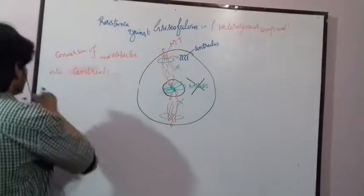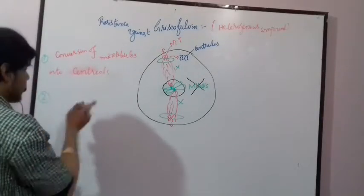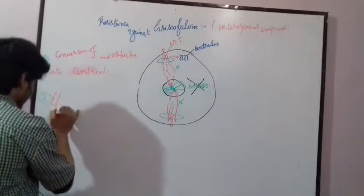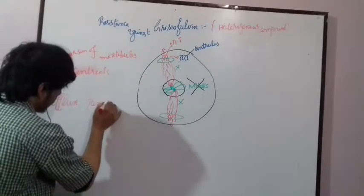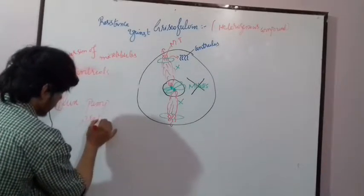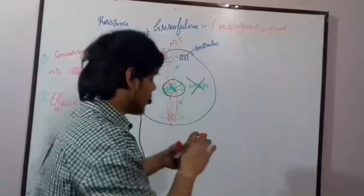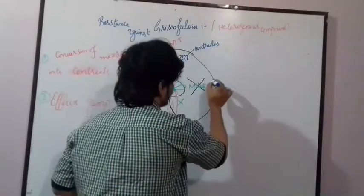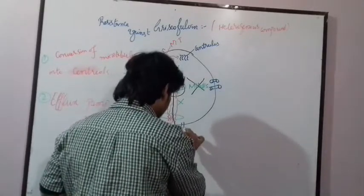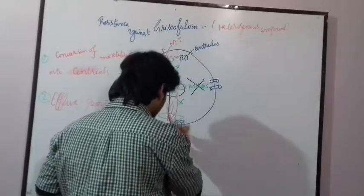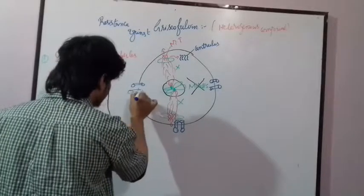The second resistance is efflux pump production. The fungi produce a kind of pump at their membrane. These are called efflux pumps, and these pumps are responsible for expelling or kicking out drugs — when the drugs get internalized, they are kicked out again through this pump.